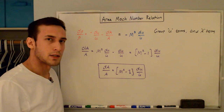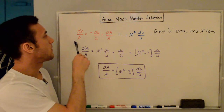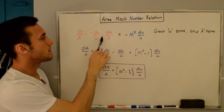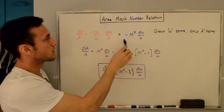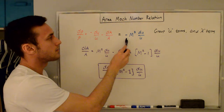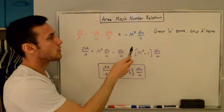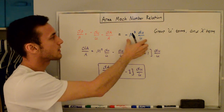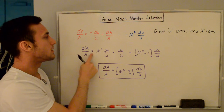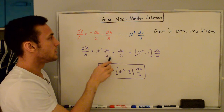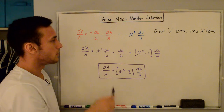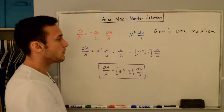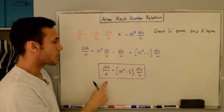To get our final expression, we combine the mass conservation and momentum conservation equations. Rewriting the mass conservation with density on one side, then substituting dρ/ρ = −M²·(du/u) from the momentum equation, and grouping the area and velocity terms, we get dA/A = M²·(du/u) − du/u. Factoring out du/u gives us our final area-Mach number relationship: dA/A = (M² − 1)·(du/u).